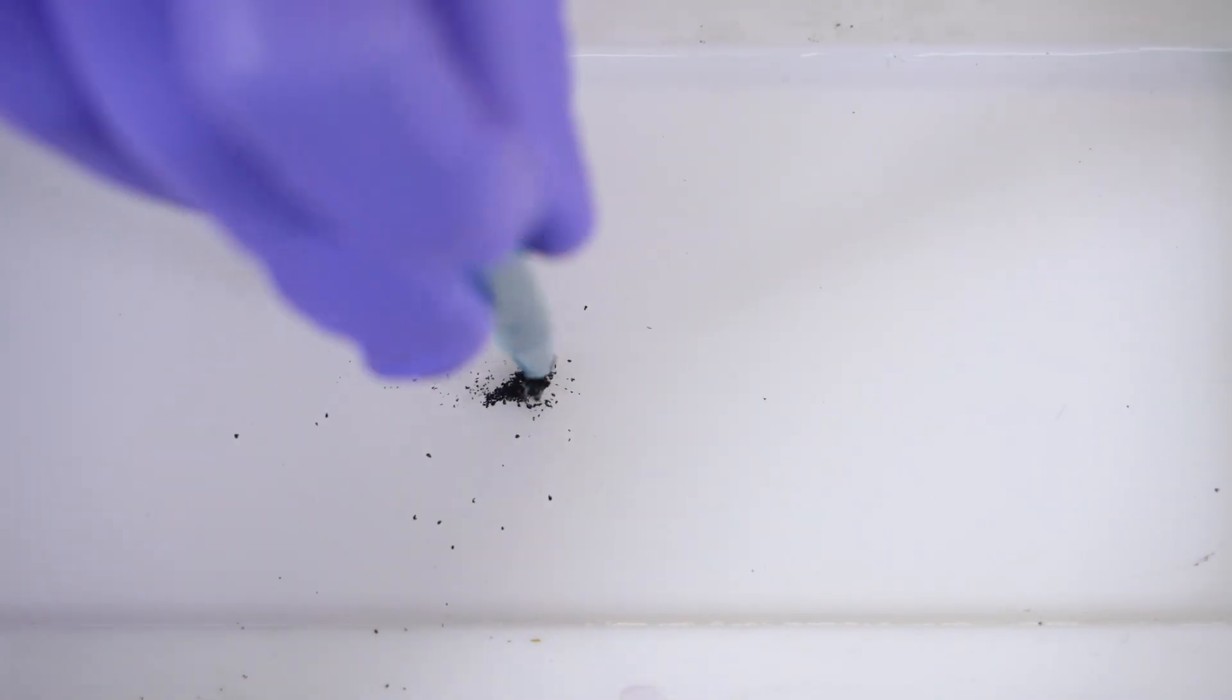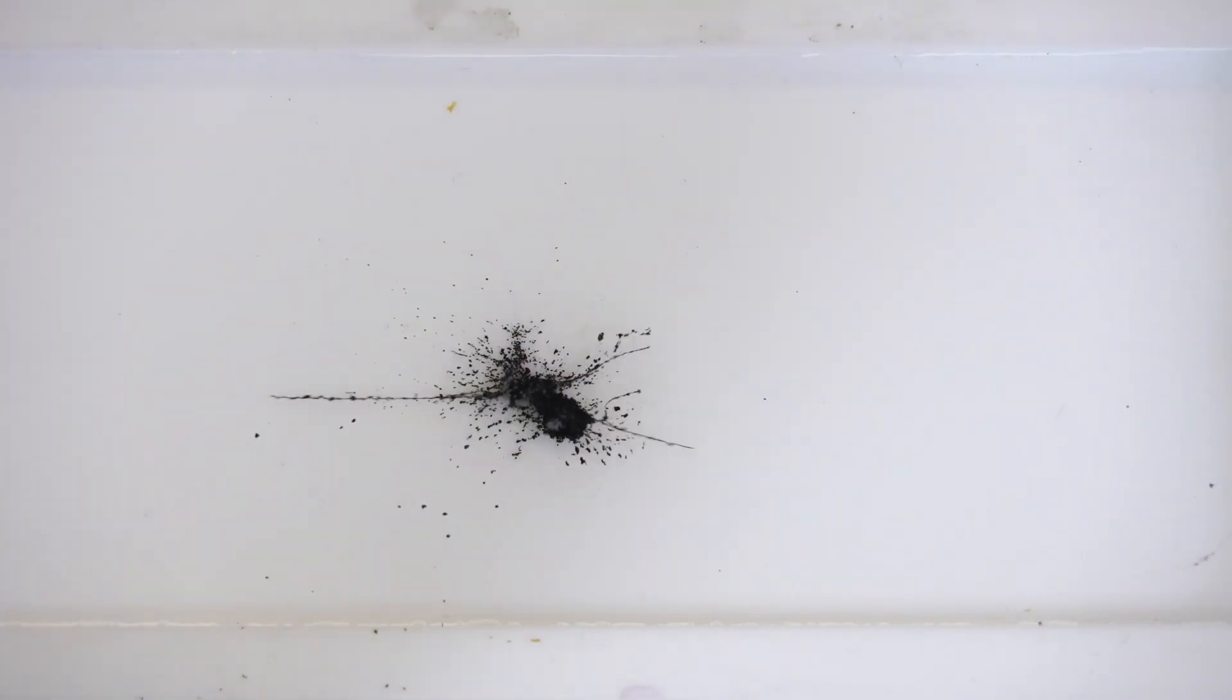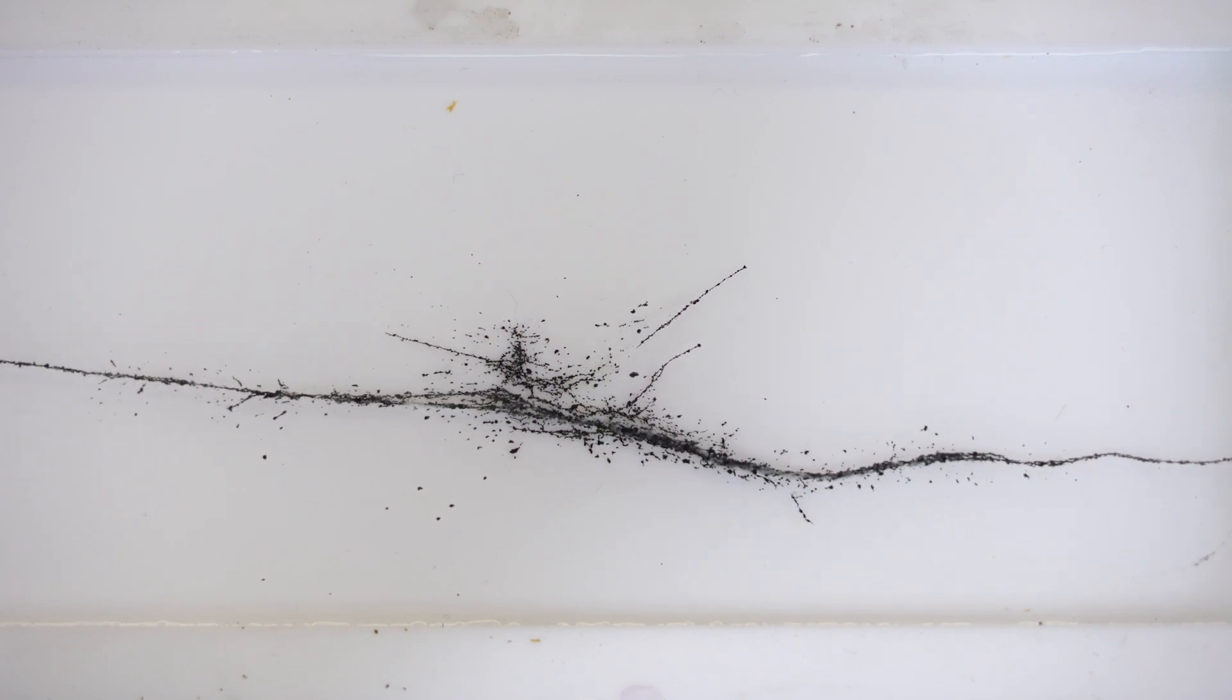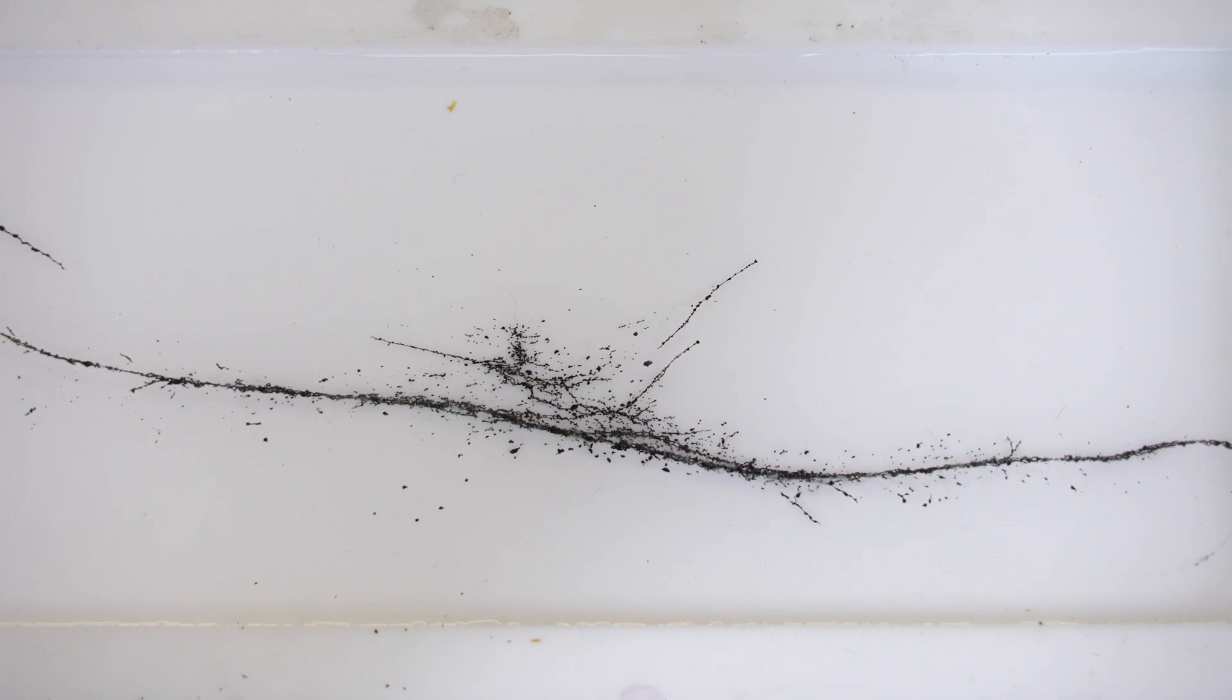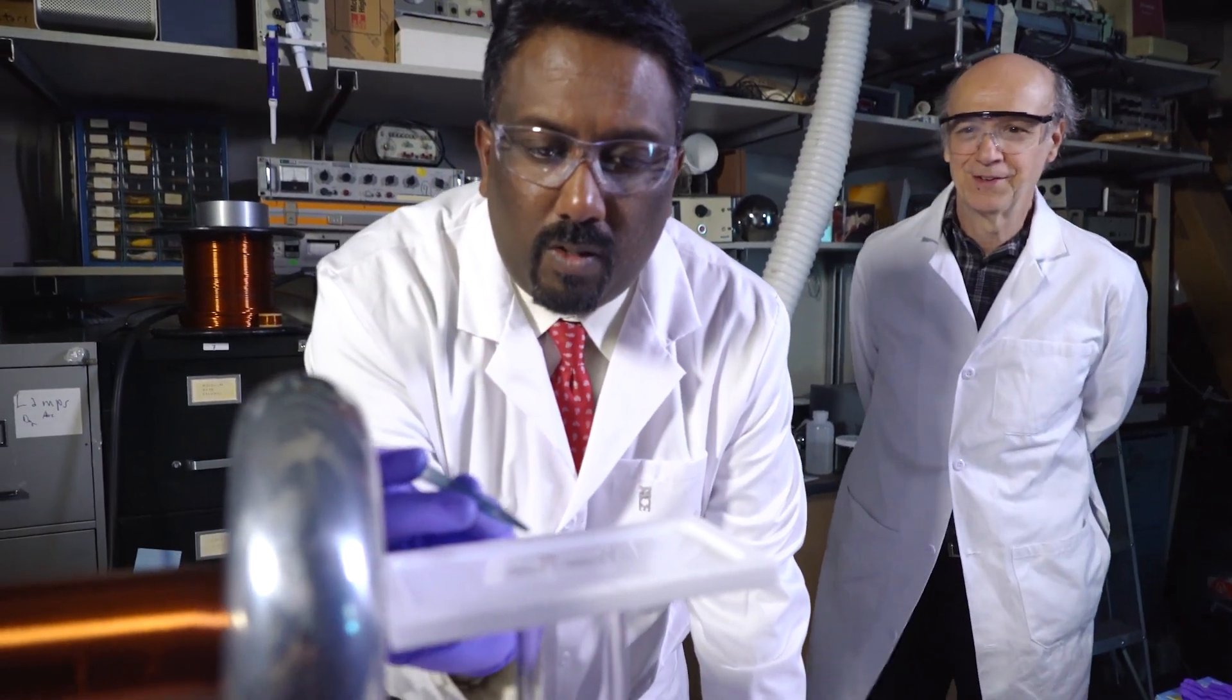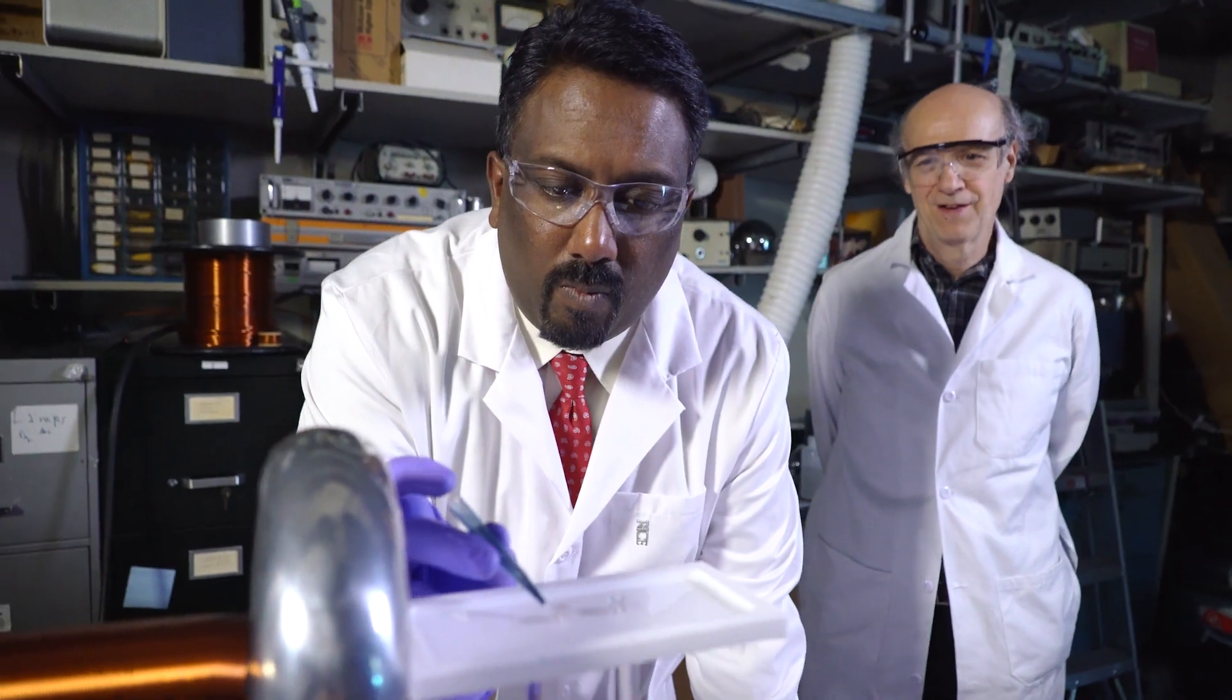We started with a dispersed solution of carbon nanotubes to see if we could actually get those things to string together. The thought came to actually just put little spots of carbon nanotubes on these electrodes and see if they just align.